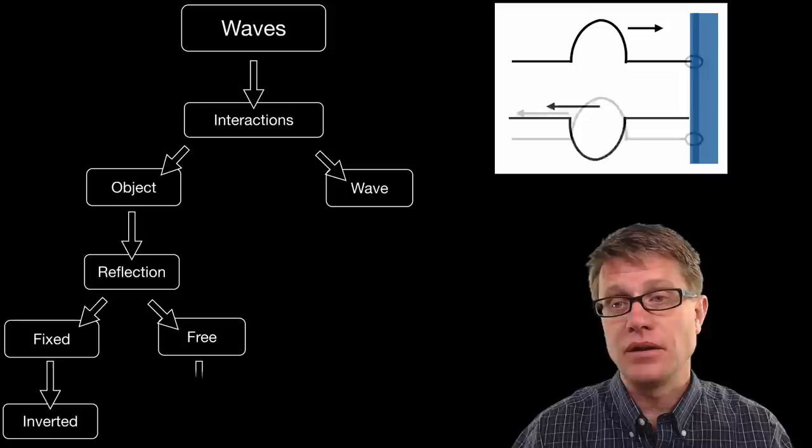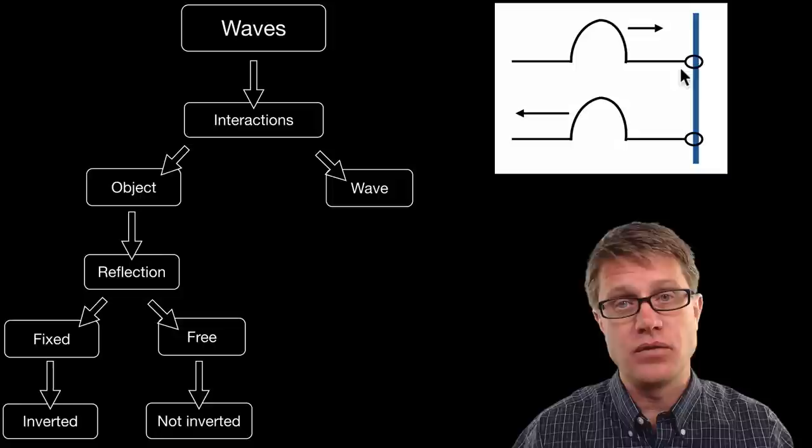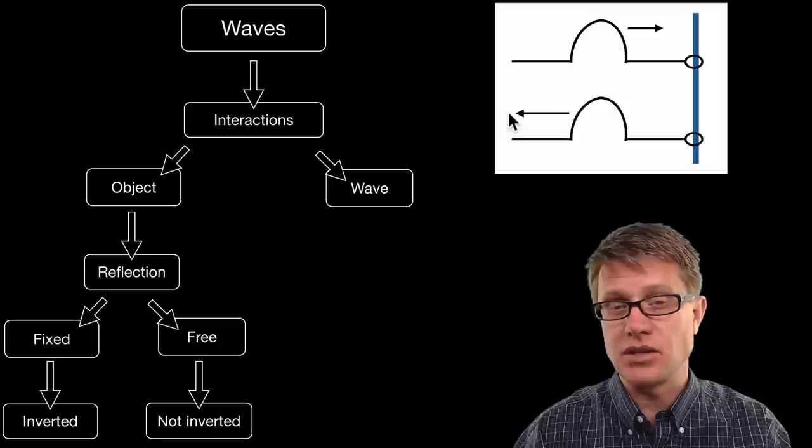What happens if it is a free object? Well the opposite happens. And so as it comes in now, let us say that this is able to move back and forth. The wave comes in on the top and it goes back on the top. And so that is reflection.